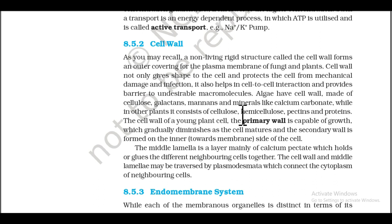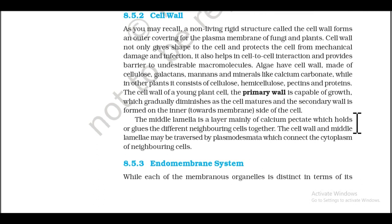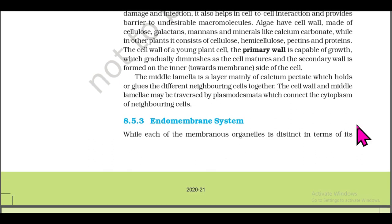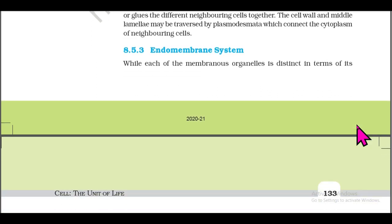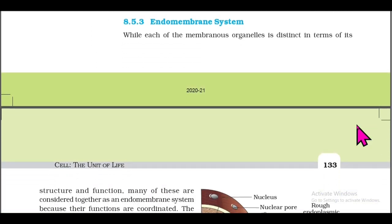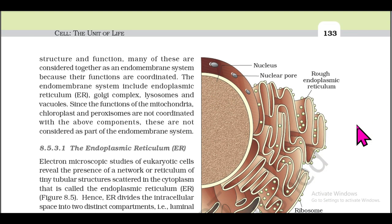The primary wall of a young plant cell is capable of growth, which gradually diminishes as the cell matures, and the secondary wall is formed on the inner side towards the membrane. The middle lamella is a layer mainly of calcium pectate which holds or glues neighboring cells together. The cell wall and middle lamella may be traversed by plasmodesmata, which connect the cytoplasm of neighboring cells.